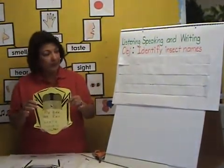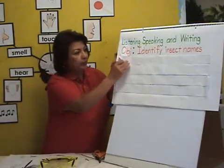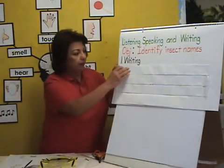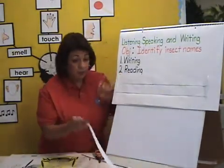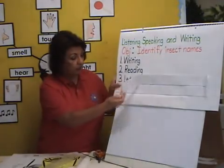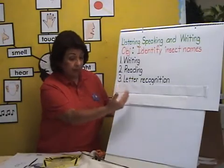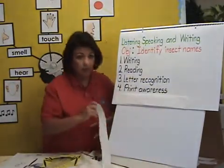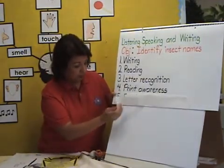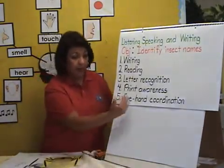There are some skills that we have identified that the children will be developing through this activity. One of the skills will be writing — they'll be writing insect names. They will also be reading the words. As they write the words, they're going to be recognizing the letters, so it'll be letter recognition. They'll also have print awareness, because if they're writing, it's print awareness. And when you copy, that's also a skill — it will be developing their eye-hand coordination.